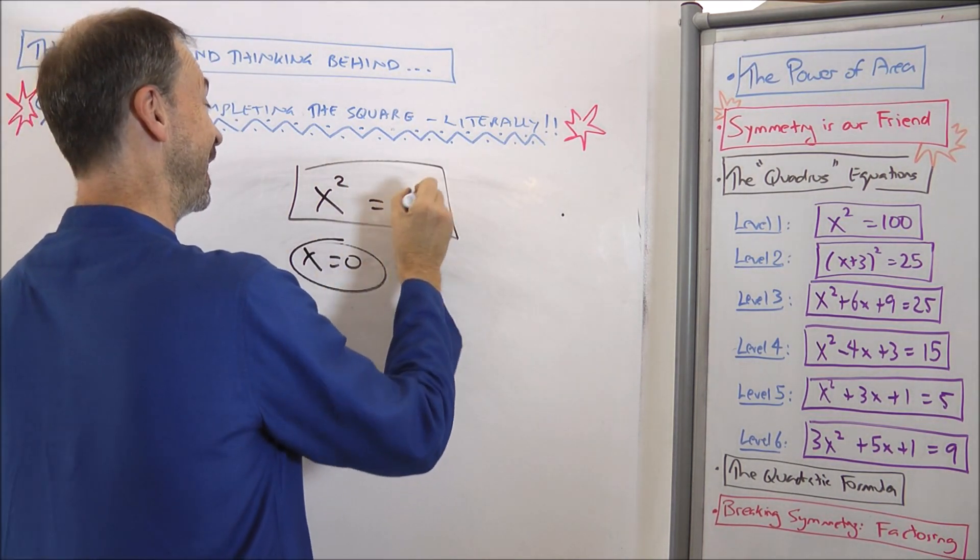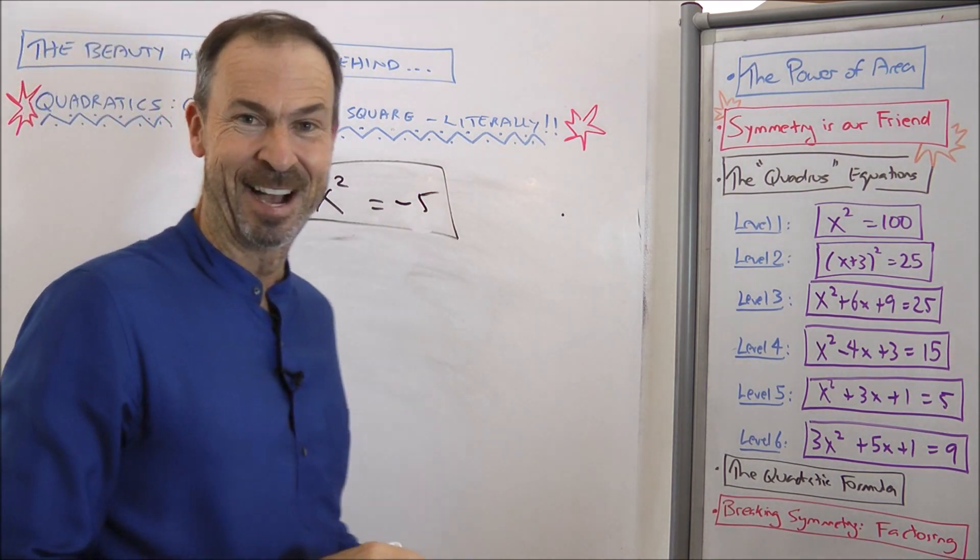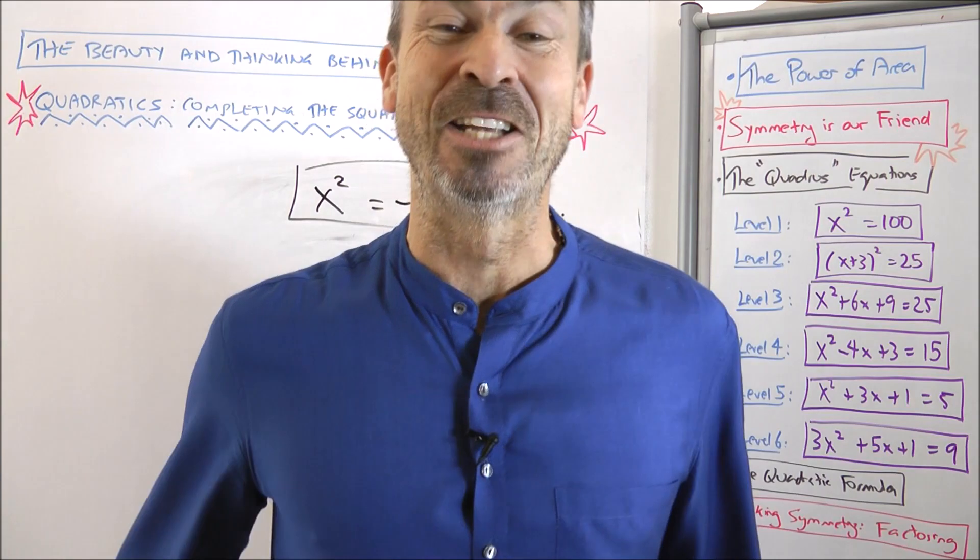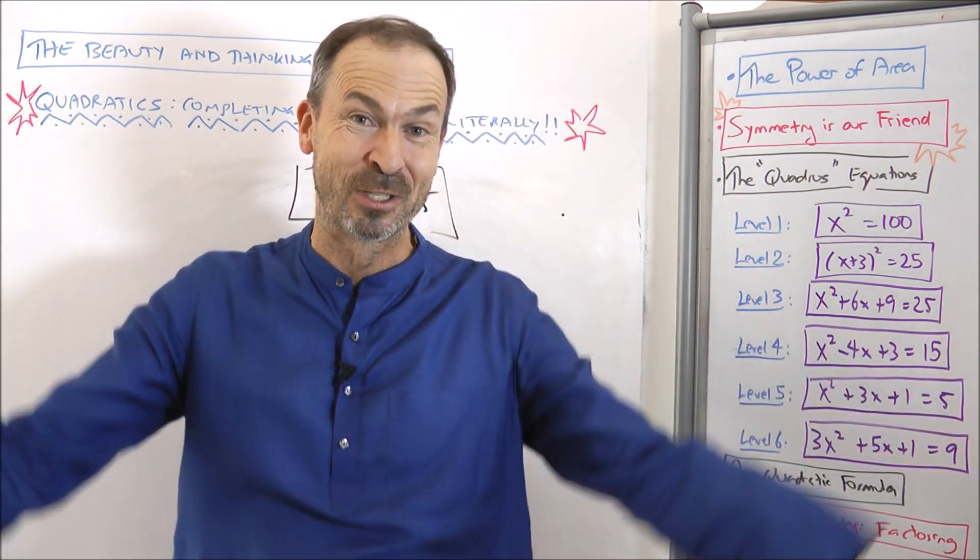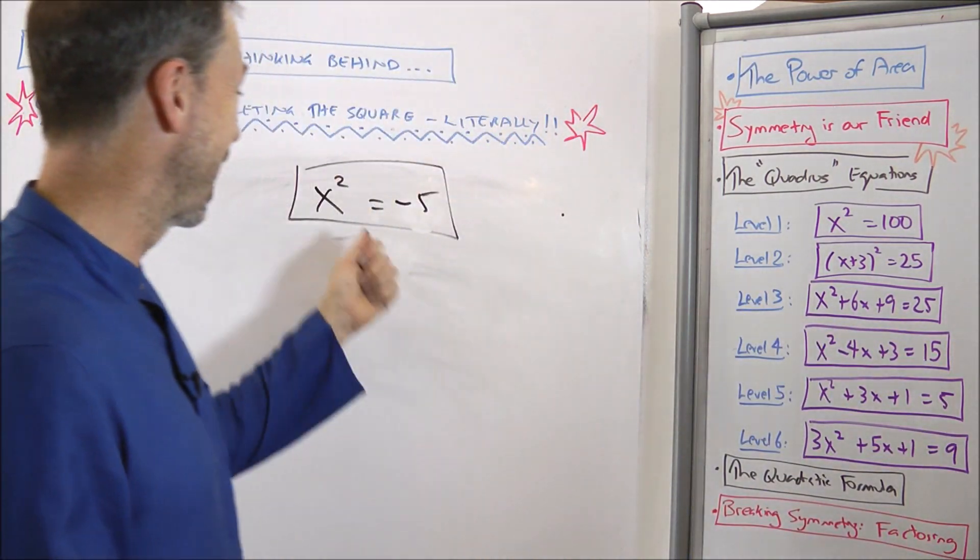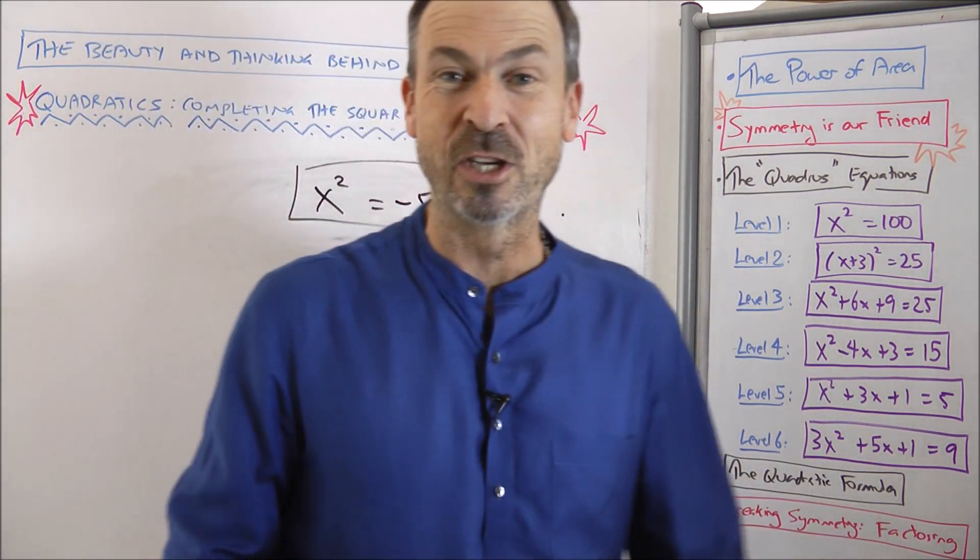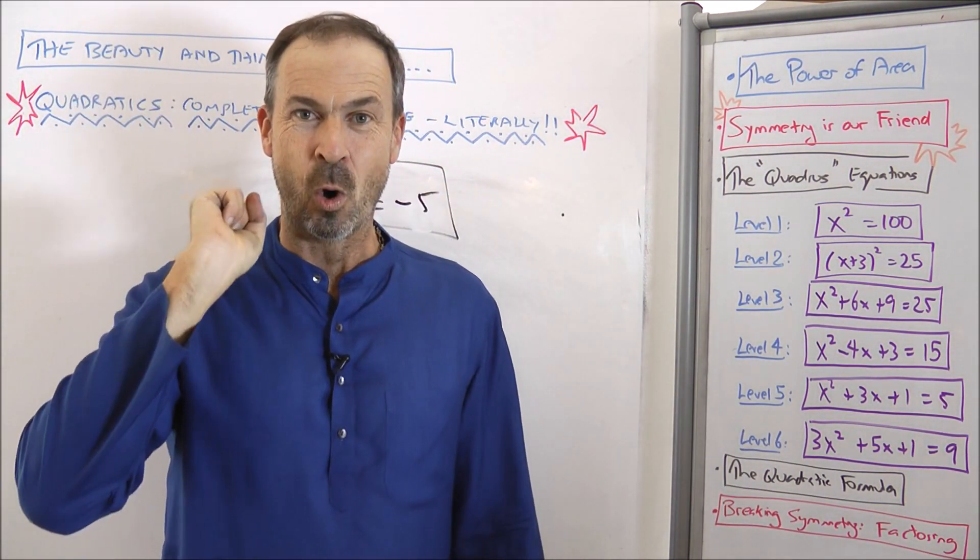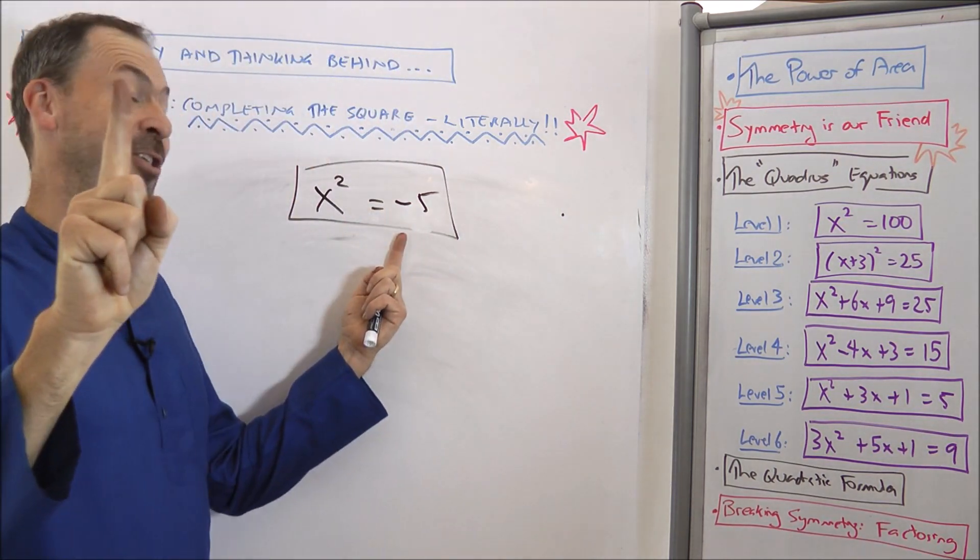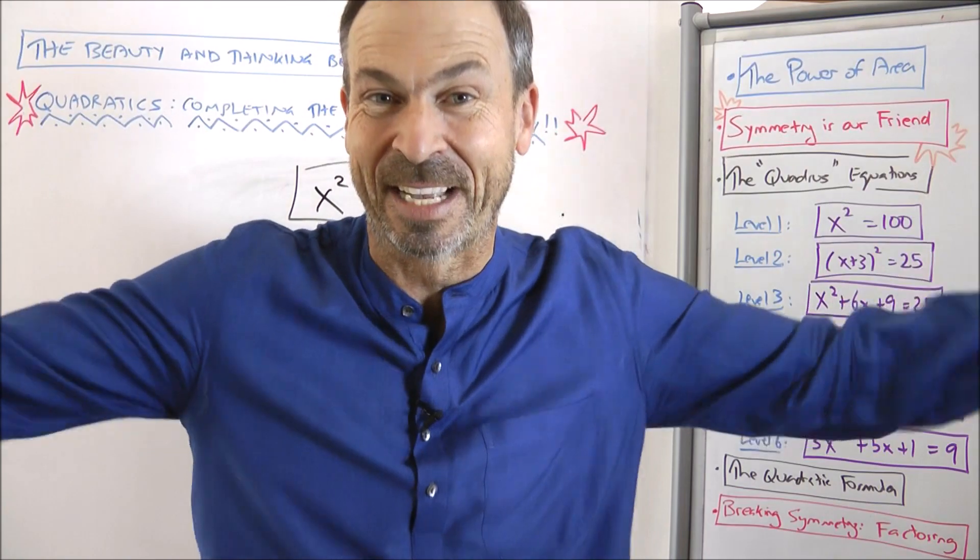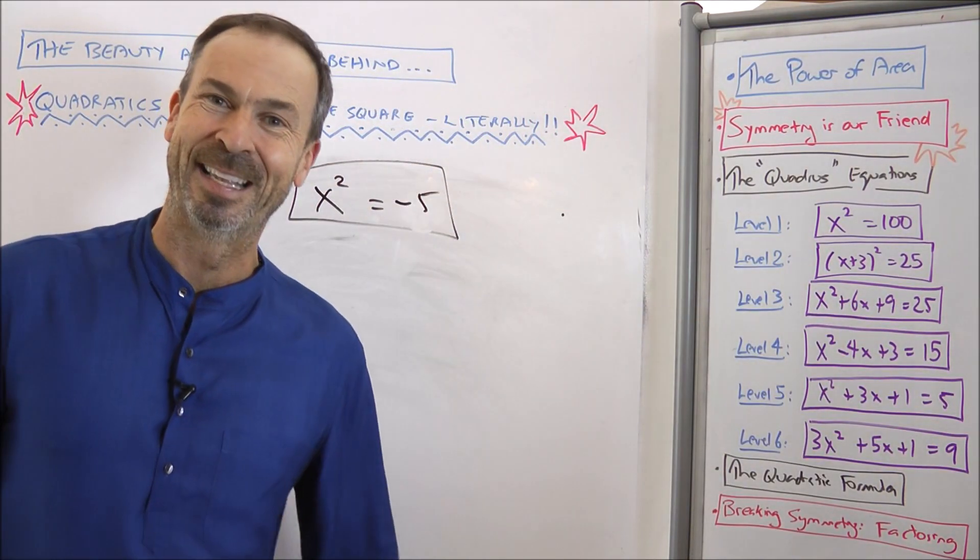In fact, it gets worse if I did this: x squared is negative five. Given I worked about negative times negative being positive, it turns out there are no numbers whose squares are negative. So this actually has zero solutions. So it looks like at level one, equations can either have two solutions or one solution, or it might turn out you have zero solutions. All right. That's level one. I think we've got that covered. Let's now go on to level two.